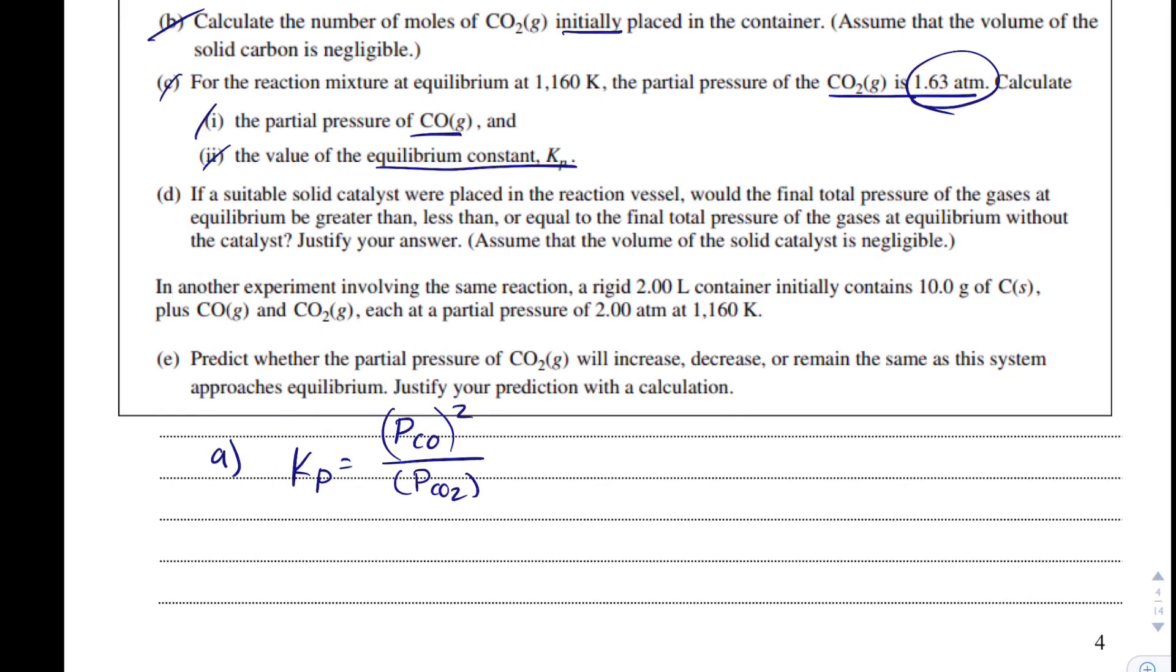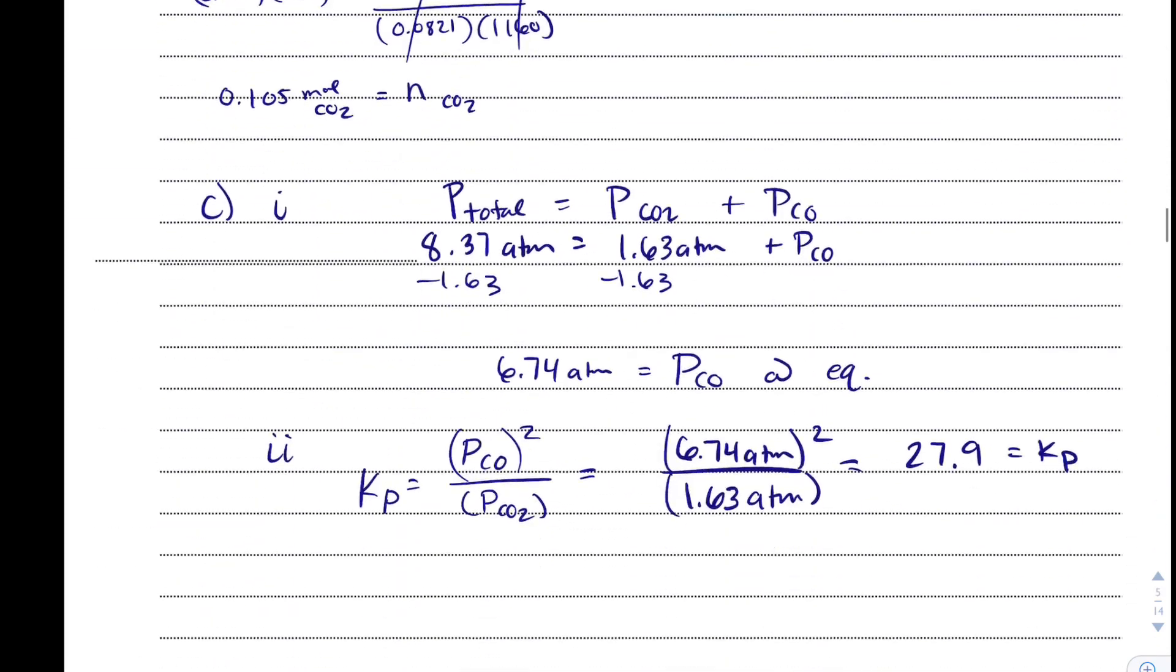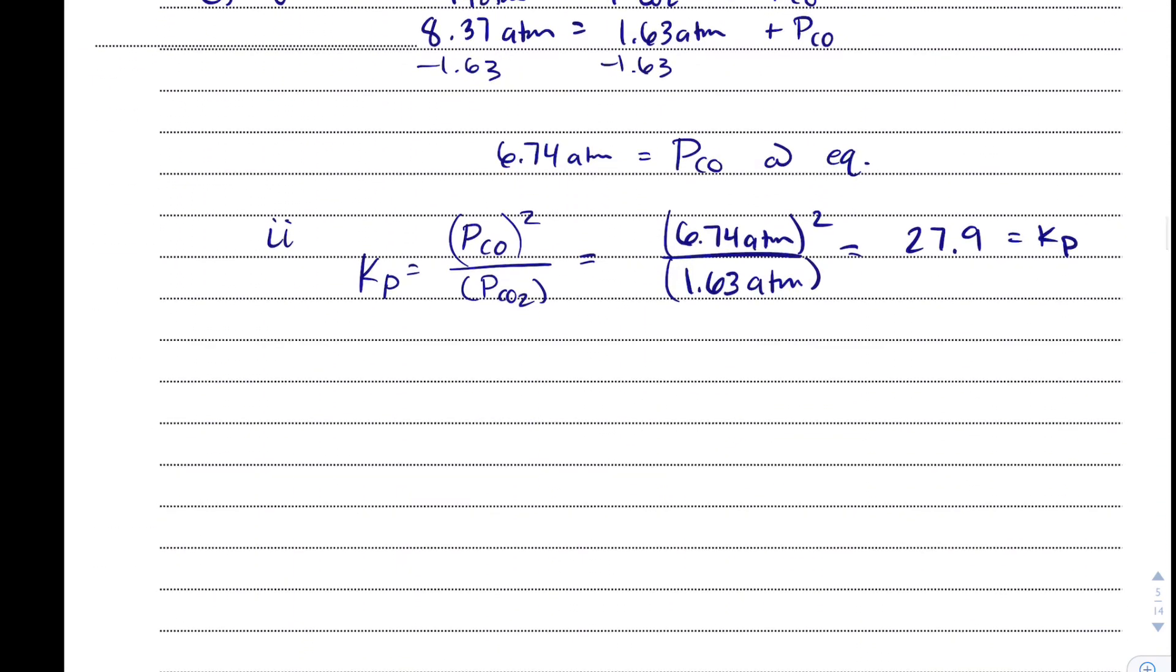So in part D, they say, if a suitable solid catalyst were placed in the reaction vessel, would we find the total pressure of the gases at equilibrium to be greater than, less than, or equal to the final total pressure of the gases at equilibrium without the catalyst? Justify your answer. So first things first, we need to make sure we actually pick one of these. We don't want to try to somehow pick more than one. We just need to pick one and stick with it.